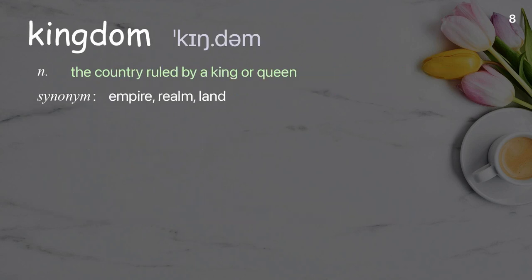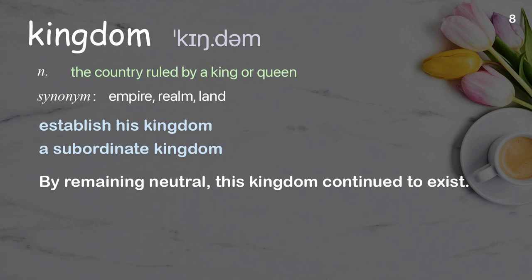Kingdom: The country ruled by a king or queen. Examples: Establish his kingdom, A subordinate kingdom. By remaining neutral, this kingdom continued to exist.